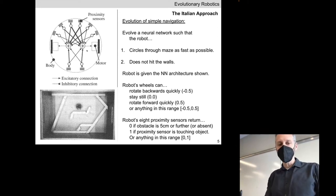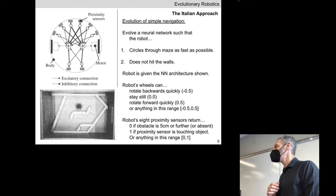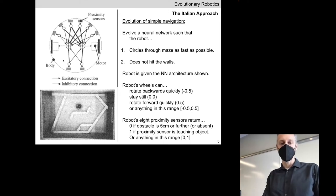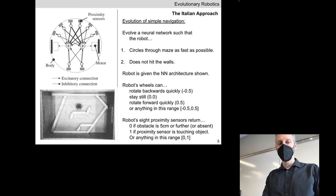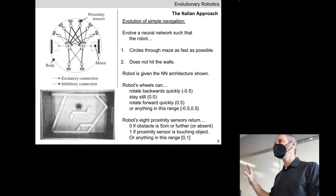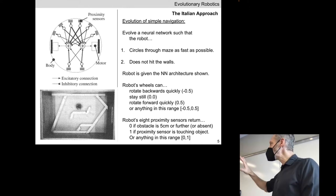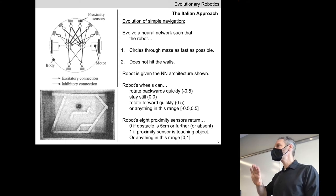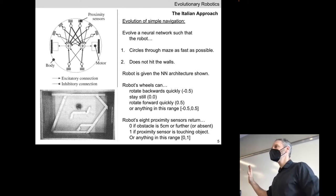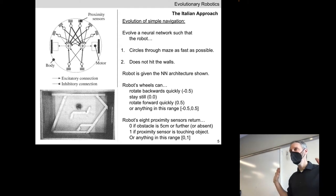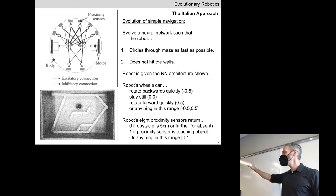If you look carefully at the cartoon visualization, there are two different arrowheads: a normal arrow representing excitatory connections, and a notched arrowhead representing inhibitory connections. The researchers are building in a little domain knowledge here. Some investigators bias evolution towards certain kinds of solutions, while others try to step back and let evolution do its thing. This experiment is somewhere in between.